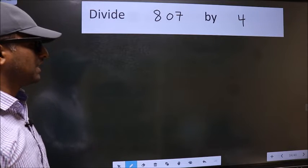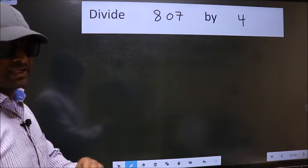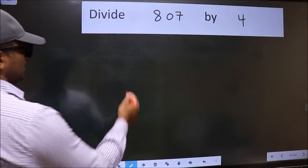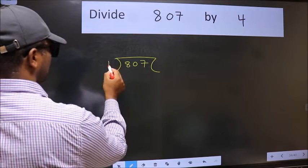Divide 807 by 4. To do this division, we should frame it in this way: 807 and 4 here.